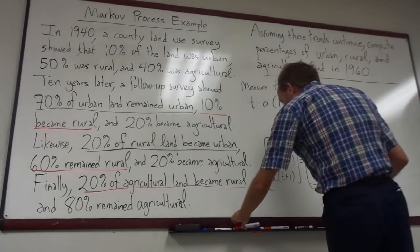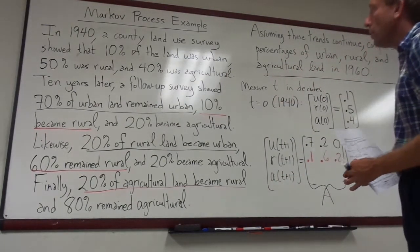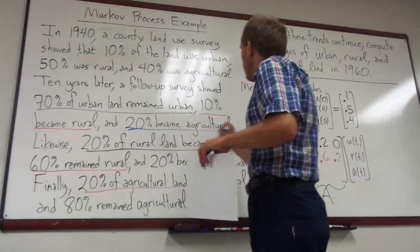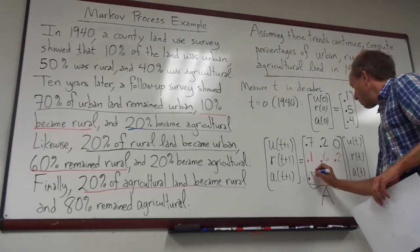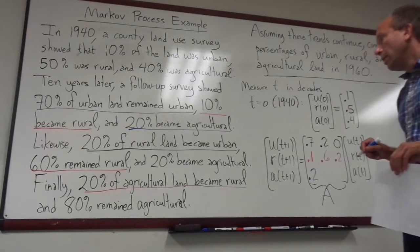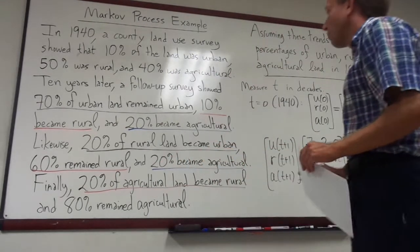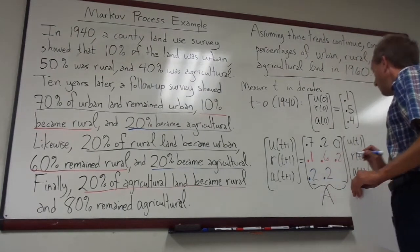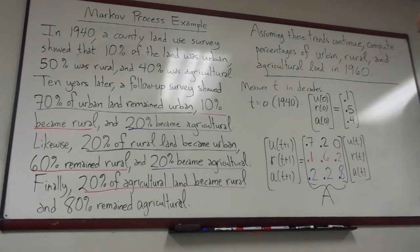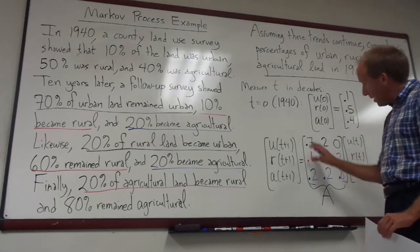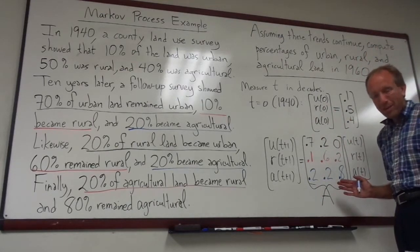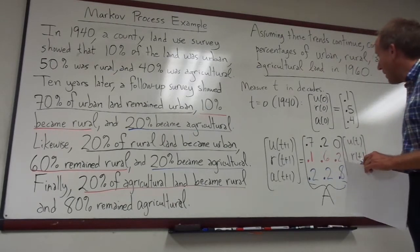Finally, what about the agricultural land? 20% of the urban land becomes agricultural, so that's 0.2. 20% of the rural land also becomes agricultural. And 80% of the agricultural land stays agricultural. One important property of Markov matrices is that the columns always add up to 1 — that's one way to check that you've set it up correctly.